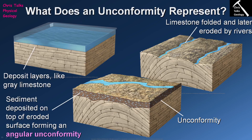This unconformity represents a portion of lost rock. If we can date our sequence of limestones — say we use a fossil in this limestone layer to date it to 250 million years ago, and something in the overlying sedimentary rock tells us it was deposited 200 million years ago — then this unconformity represents 50 million years of lost time. The upper limestone is 250 million years old, this sediment is 200 million years old, so the unconformity represents 50 million years of rock eroded away and lost.